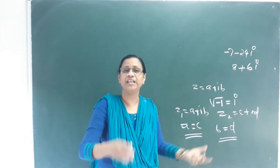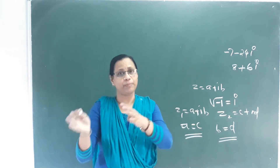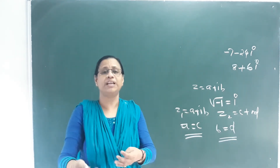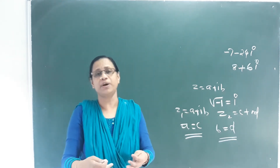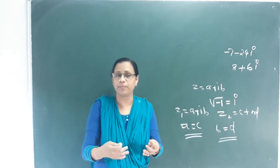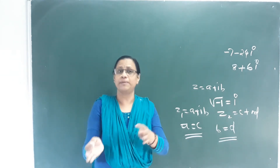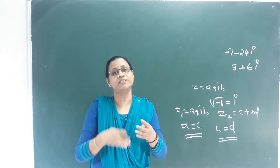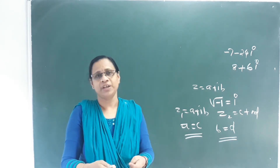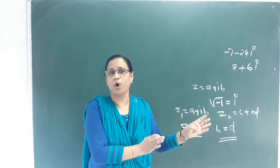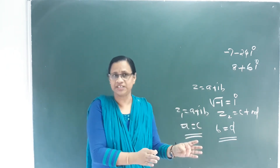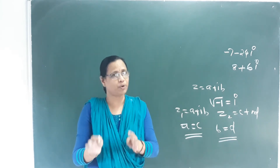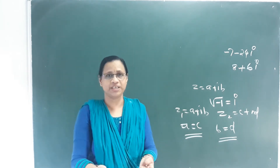For operations on complex numbers: we add the real parts together and add the imaginary parts together. We also subtract, multiply, and divide complex numbers. These are the properties — addition, subtraction, multiplication, and division.